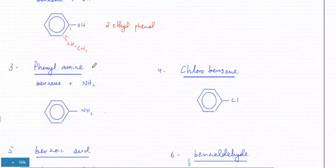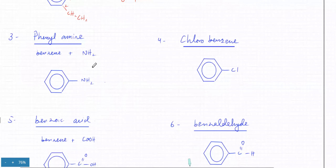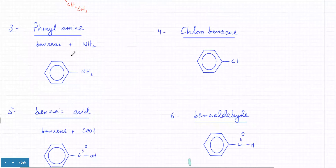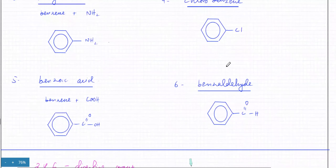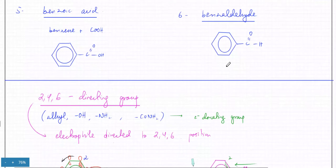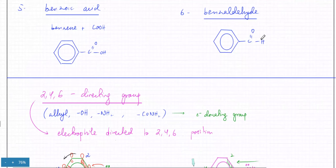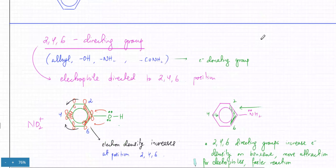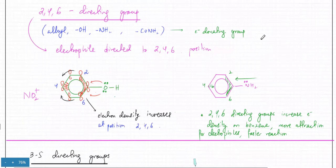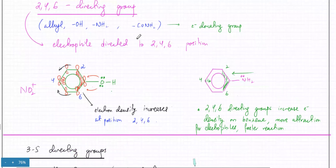We talked about phenylamines. In phenylamines, you had NH2 — benzene plus NH2 was known as a phenylamine. We also covered chlorobenzene, benzoic acid, and an aldehyde. We started talking about 2,4,6 directing groups: if you have OH, NH2, or CONH2 groups, these are given in the data booklet.